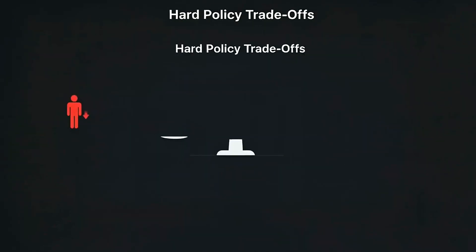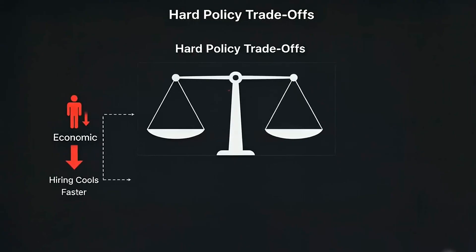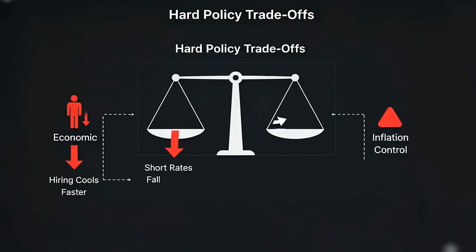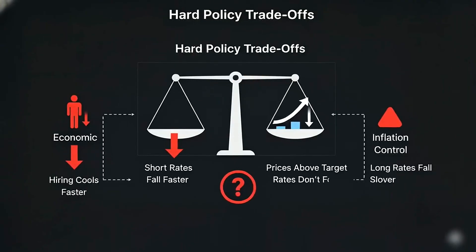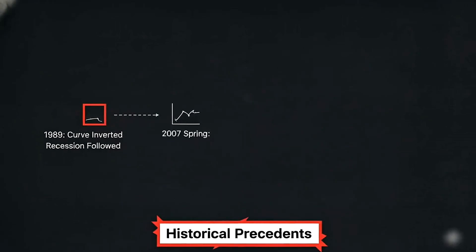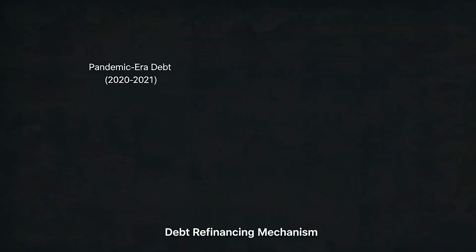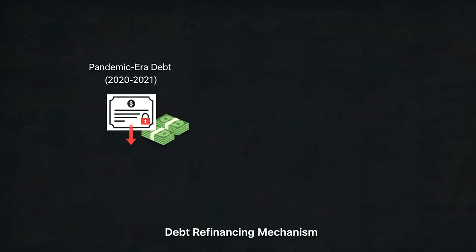When short rates fall faster than long rates while hiring stalls, markets aren't pricing calm — they're pricing fragility. In 1989, the curve flipped, then recession followed. In 2007, spreads looked quiet in spring. By August, funding snapped. The pattern showed up early.